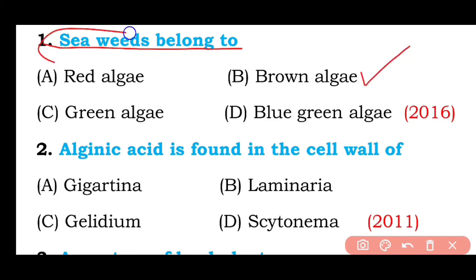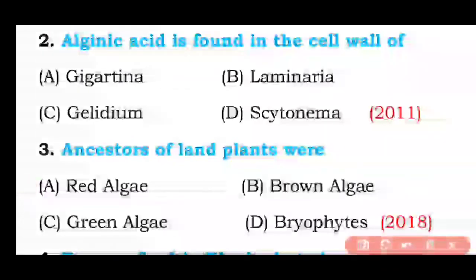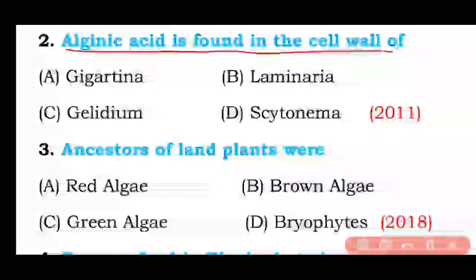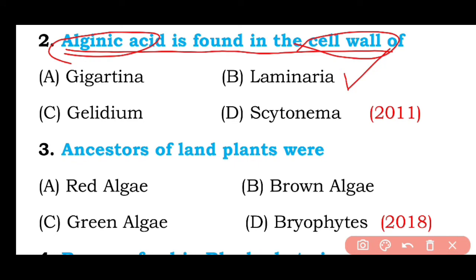Question number two: Alginic acid is found in the cell wall of Gigartina, Laminaria, Gelidium, or Scytonema? The correct answer is option B — alginic acid is present in the cell wall of brown algae such as Laminaria.